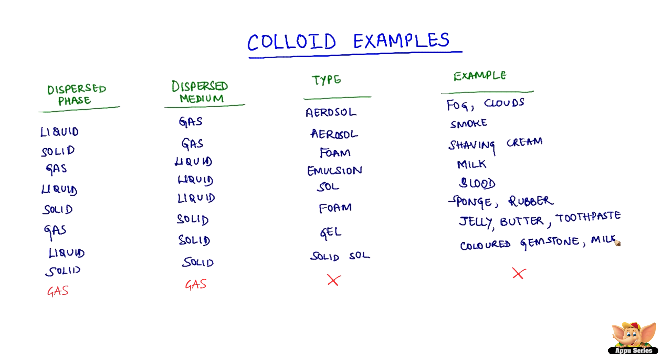You will observe that we don't have a colloid of the gas-gas type, because gases are miscible. That is, they mix in all proportions with each other, forming a homogeneous mixture, and they do not form colloids.